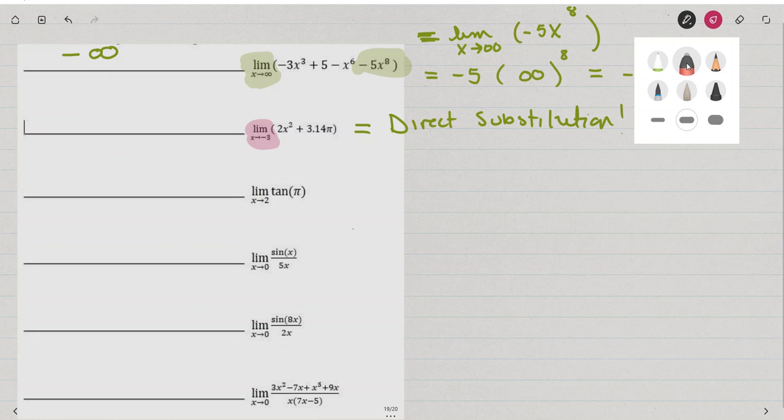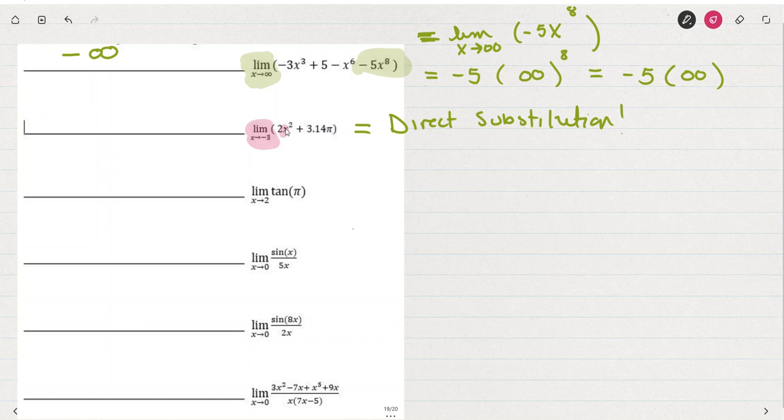So if I use direct substitution to replace this x with a -3, let's see what that looks like. We have 2 times (-3)² plus, how do you like this, 3.14π. Don't be afraid of that. It's just a constant. It's just π times 3.14. It's not 3.14 squared. So leave that π. Don't do anything with it. When I look at this 2 times the opposite of 3 squared, the opposite of 3 squared is a positive 9. So 2 times 9 is 18 plus 3.14π.